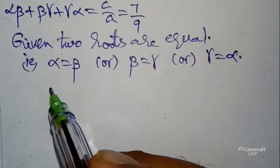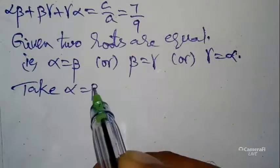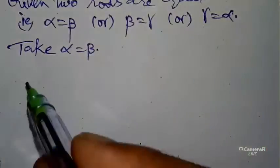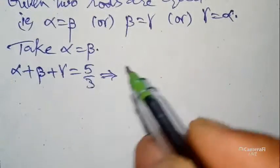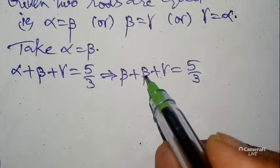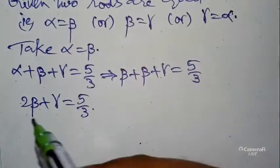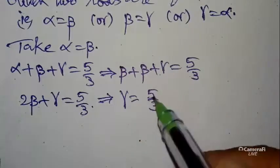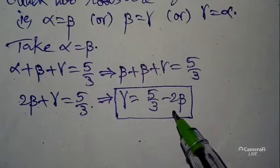First impression is the best impression — so we take α = β. Substituting α = β into α + β + γ = 5/3, we get β + β + γ = 5/3, which gives 2β + γ = 5/3. Rearranging, γ = 5/3 - 2β. We will keep this value in a box and use it later.